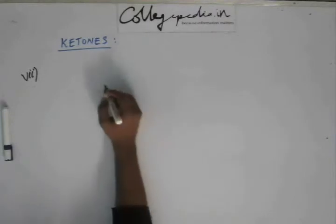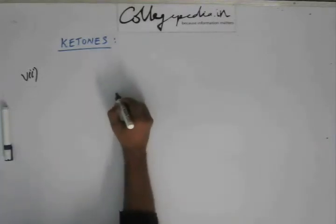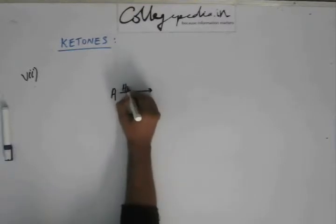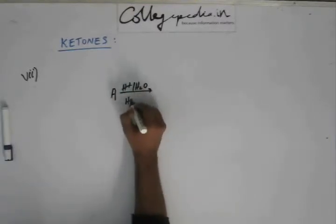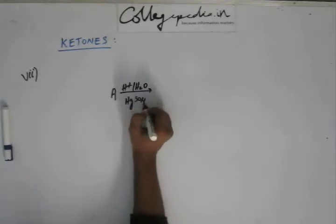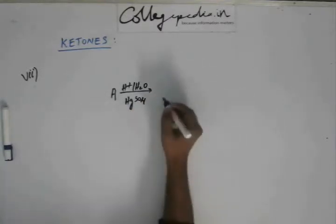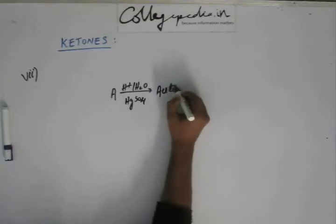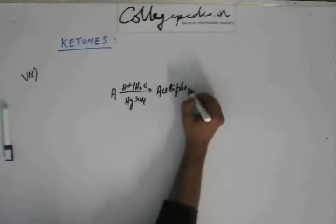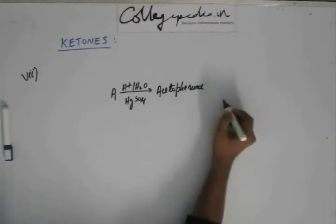Now, conversion problem. Suppose I have A. On A I added H+, H2O, and HgSO4. Now this is giving me acetophenone.